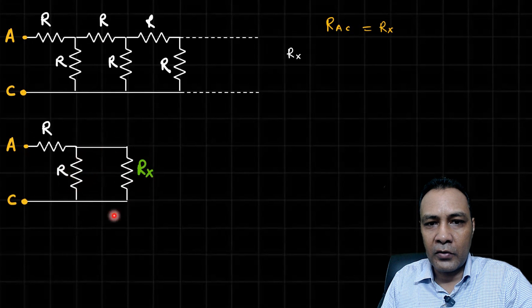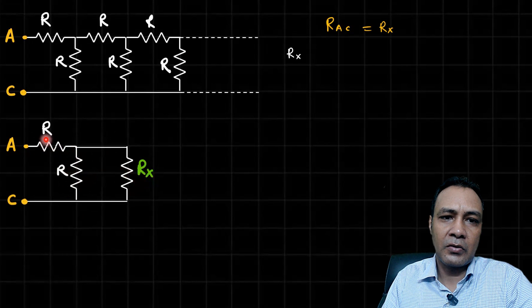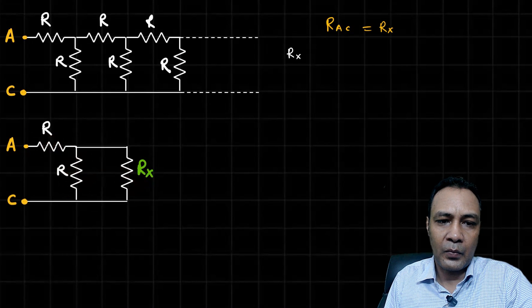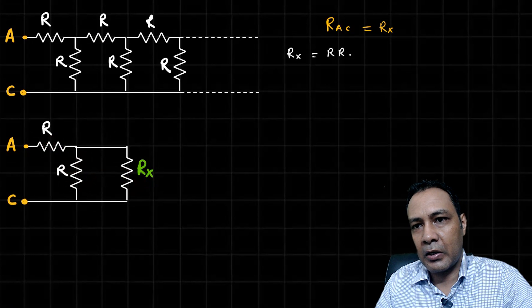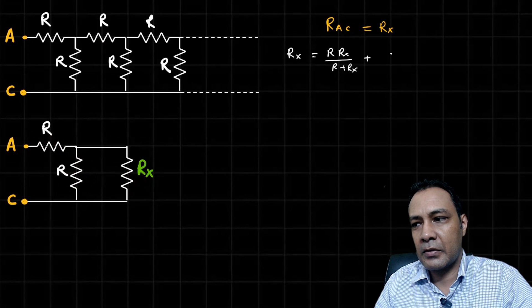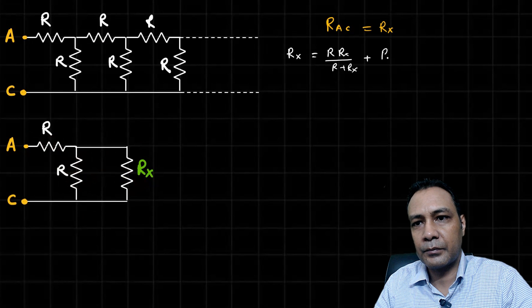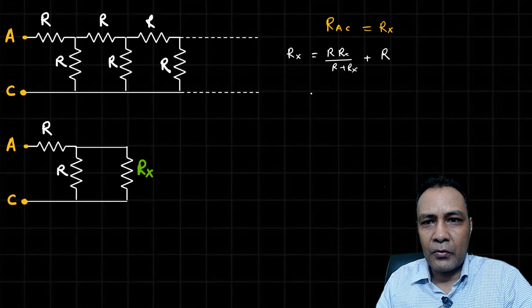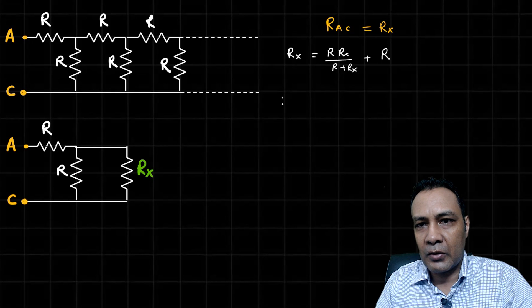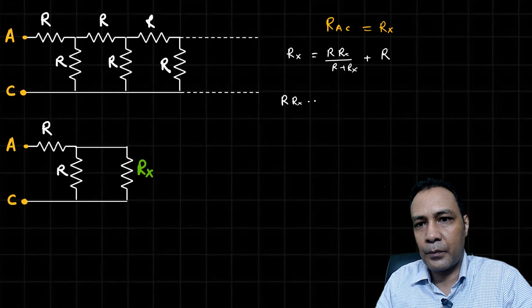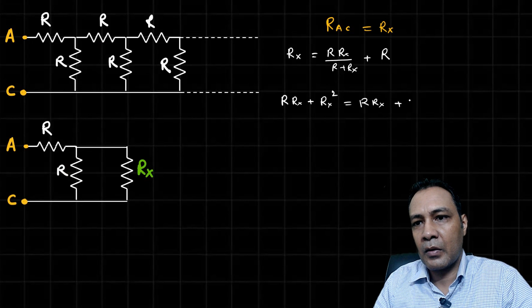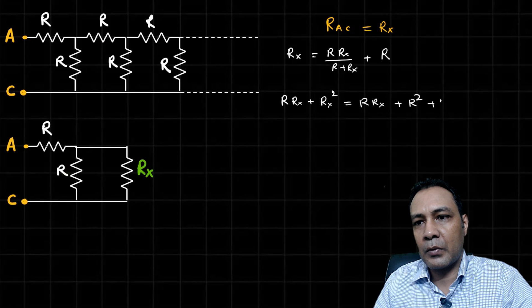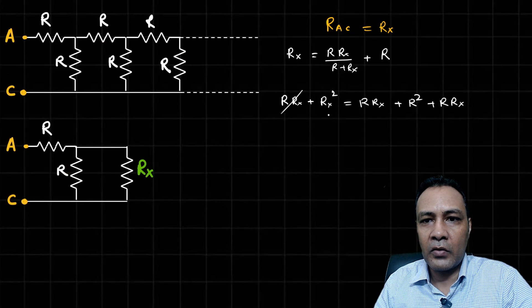So R_X equals R times R times R_X divided by R plus R_X, plus R. Just simplify that thing. Take LCM of R plus R_X. So that will be R times R_X plus R_X squared equals R times R_X plus R squared plus R times R_X.